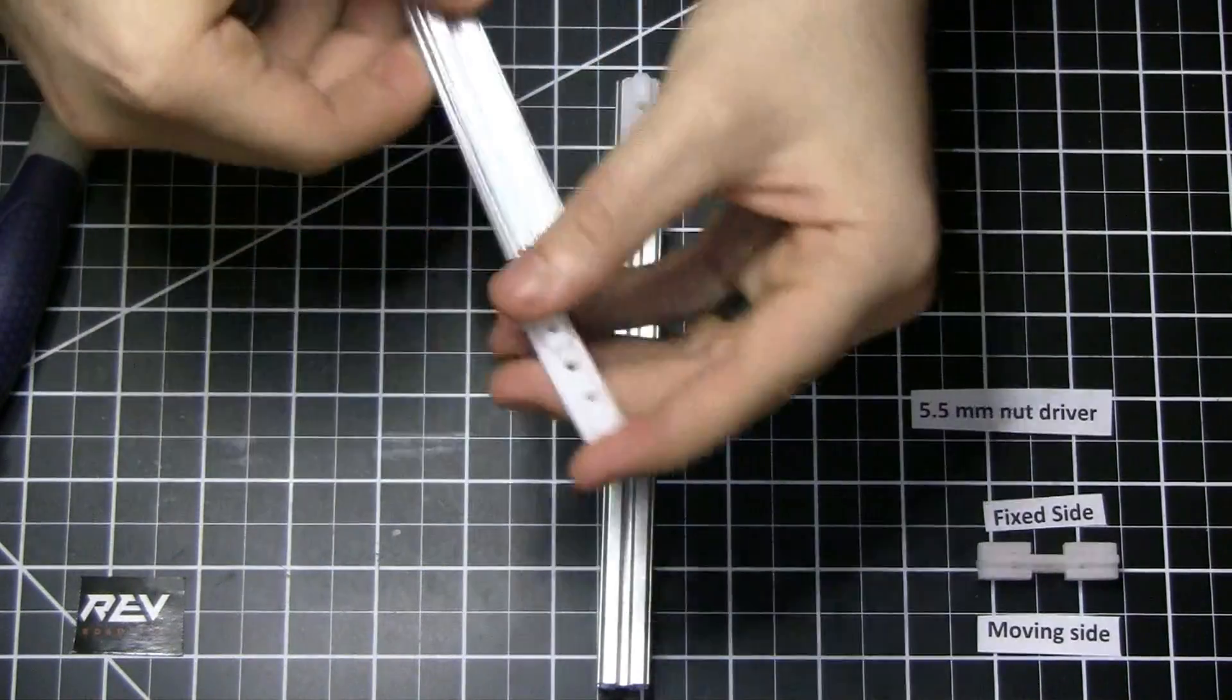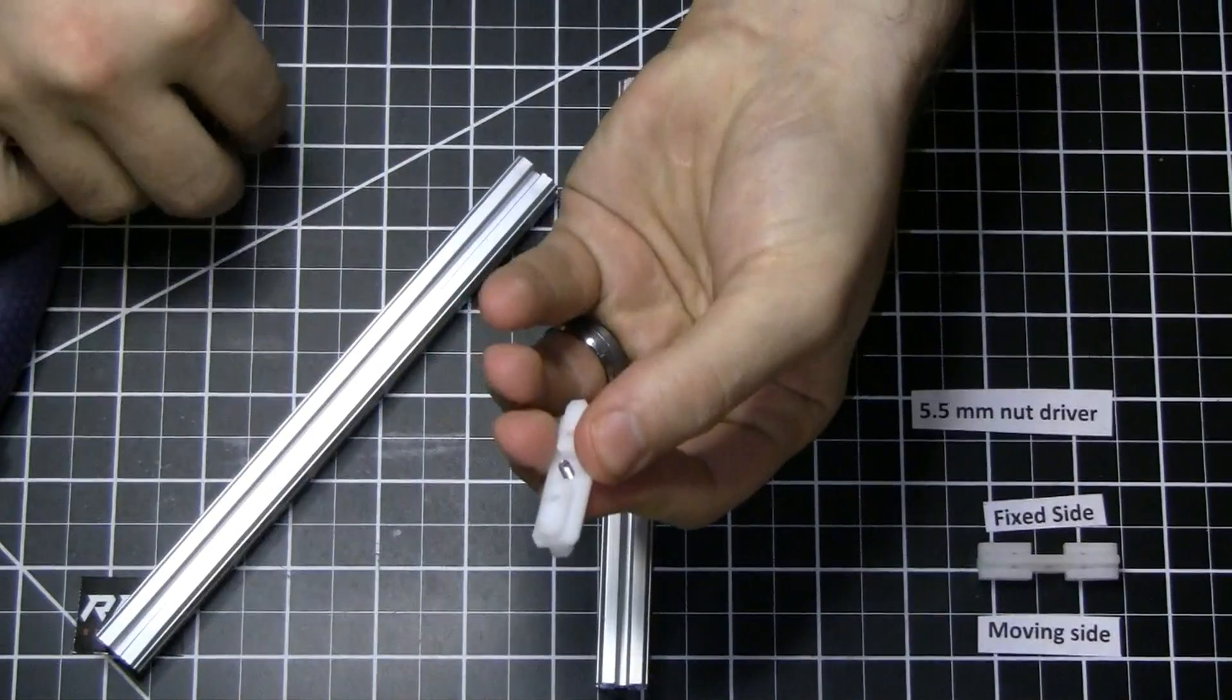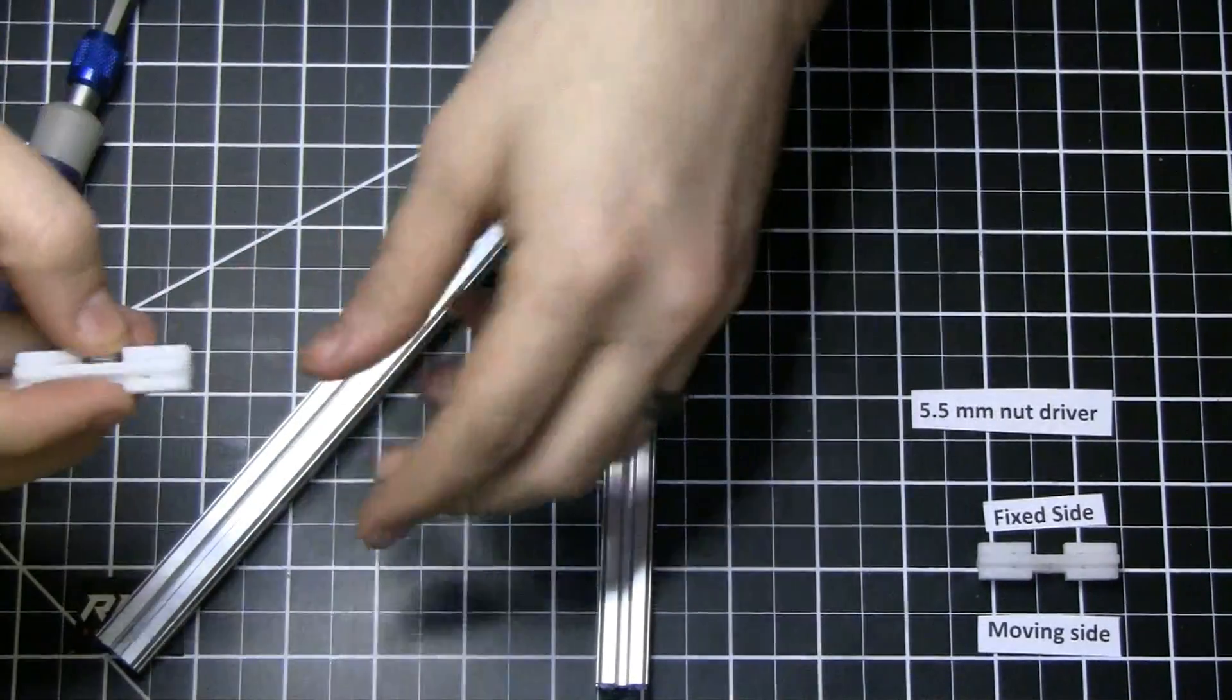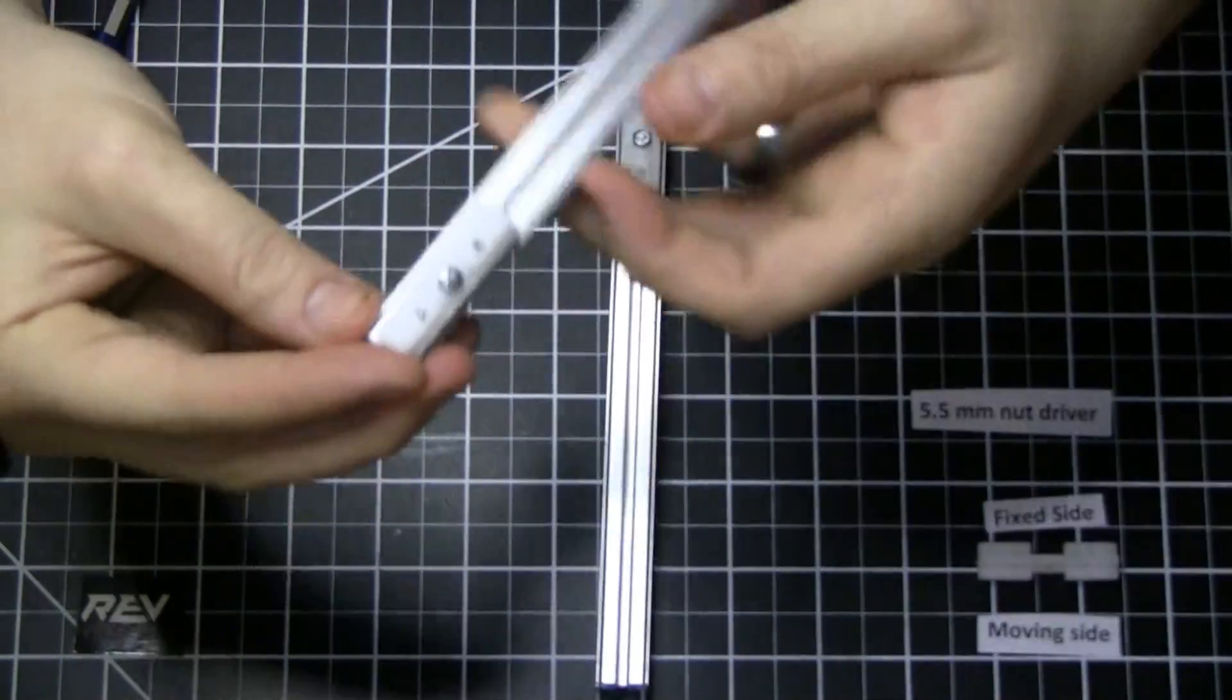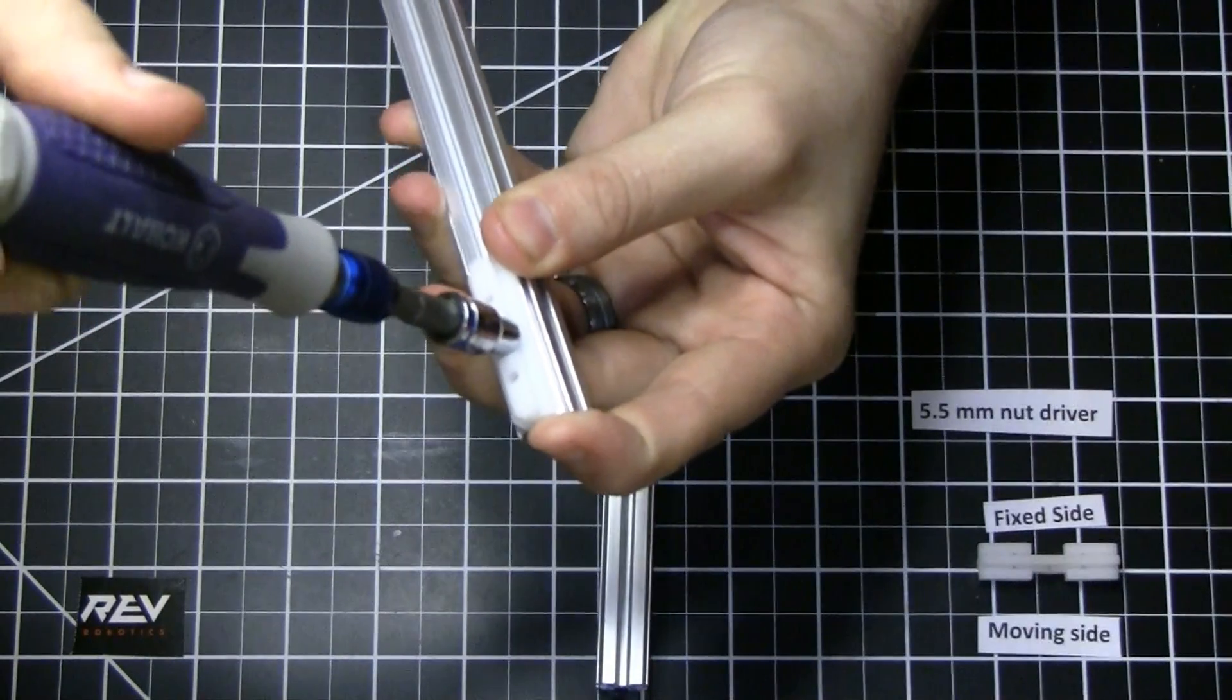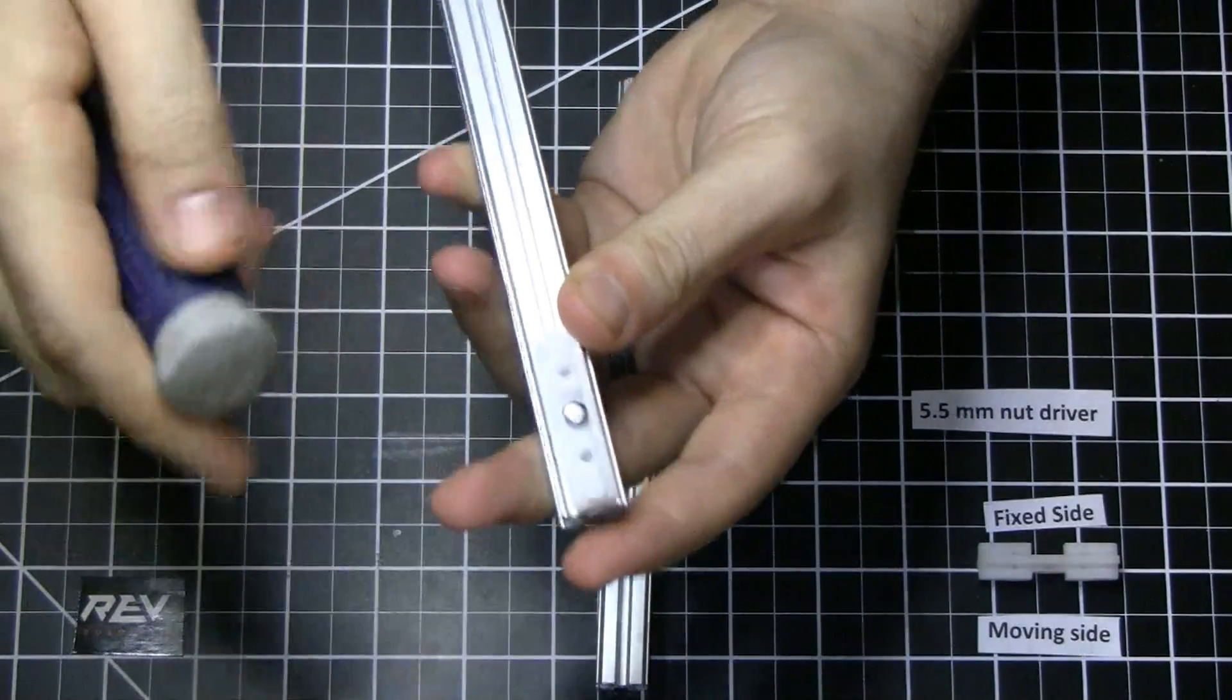And now you do the same thing on the other side. Screw goes through the top, nut on the fixed side of the slider. All you have to do is just get it started, slide it into your rail and tighten it up. I just slightly snug it and then adjust it so that they're parallel.